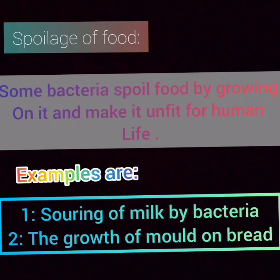Spoilage of food: some bacteria spoil food by growing on it and make it unfit for human use. Examples are souring of milk by bacteria and the growth of mould on bread.